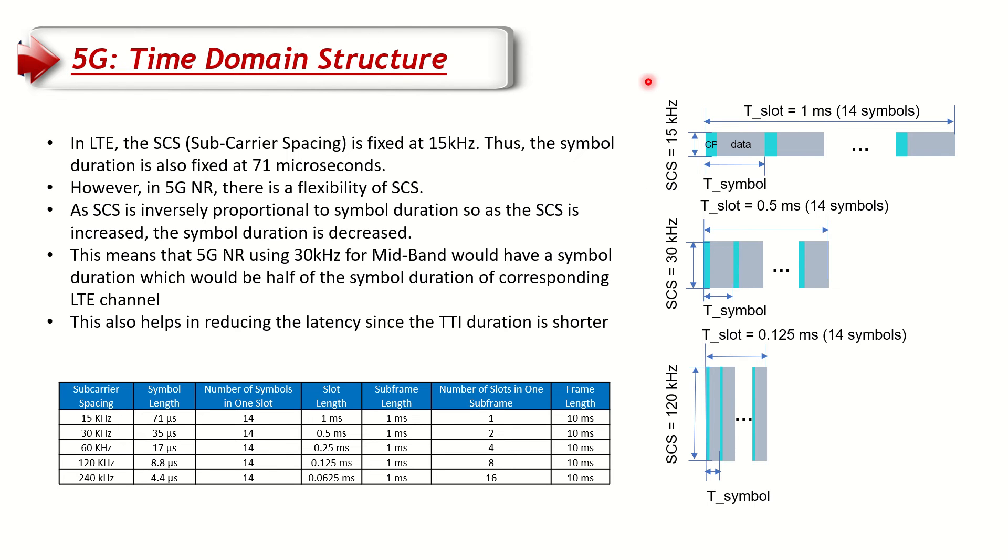In LTE we have a fixed subcarrier spacing or subcarrier bandwidth. That means in the frequency domain, the subcarrier bandwidth or subcarrier spacing is fixed to 15 kilohertz in LTE. The time domain symbol length is actually inversely proportional to the subcarrier spacing.